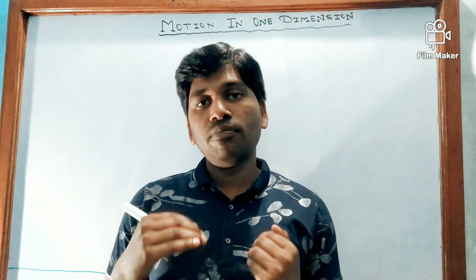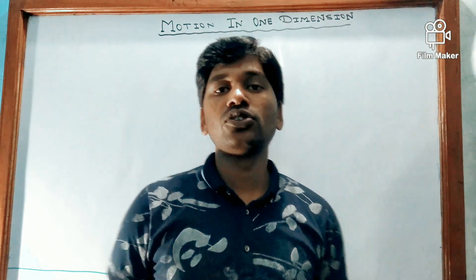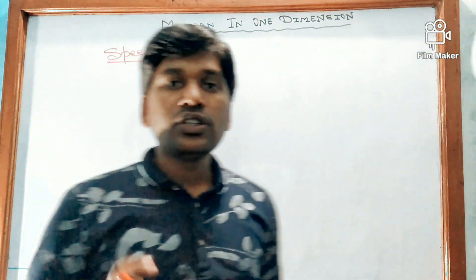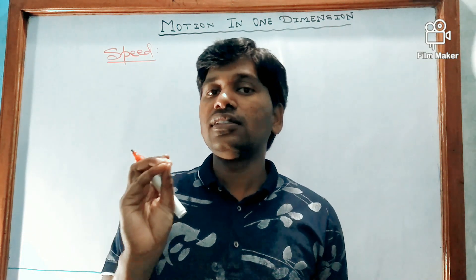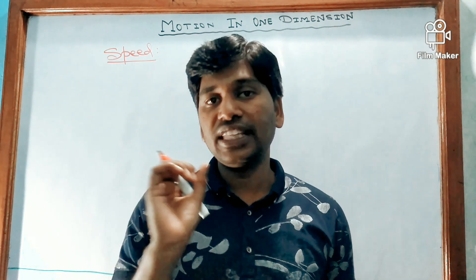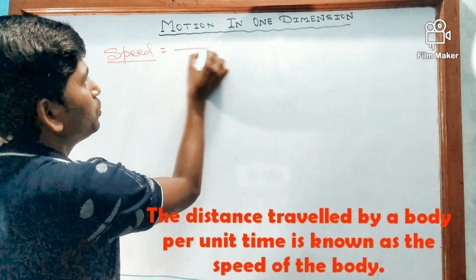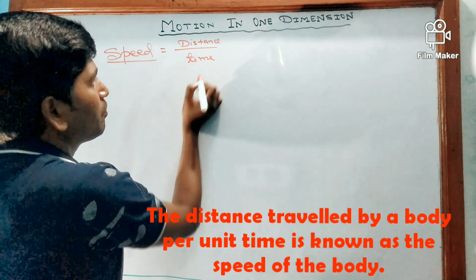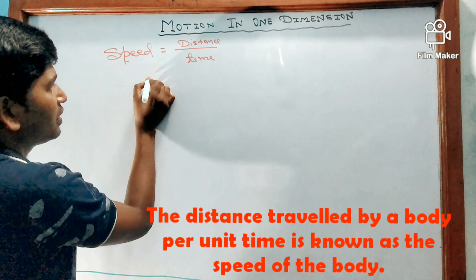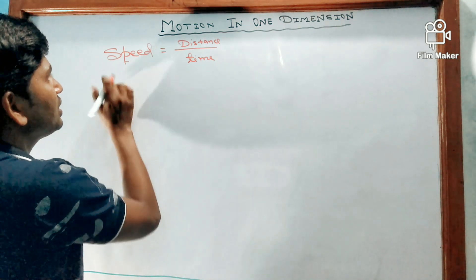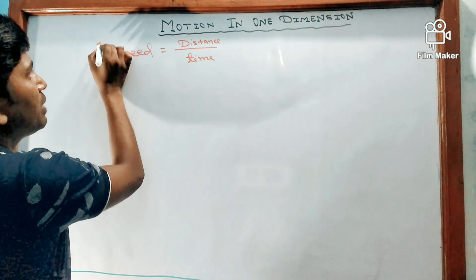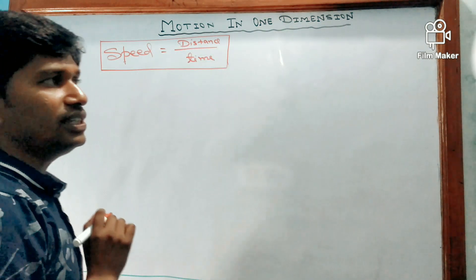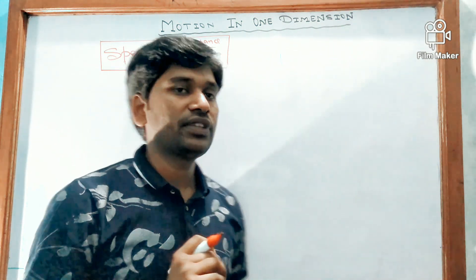Now let us see speed. Speed of a body is the distance traveled per unit time. We can write: speed equals distance divided by time. This is the expression for speed.